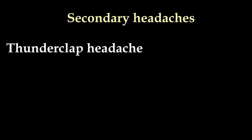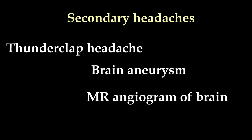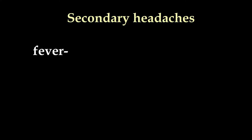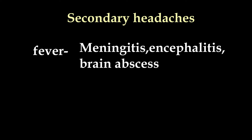The most dangerous is the thunderclap headache, which occurs at the back of the head and then moves to involve the whole head. It is associated with vomiting and is usually due to an aneurysm in the brain. This can be found by MR angiogram, and a coil can be inserted which is life-saving. CT scan detects bleeding in the subarachnoid region after the rupture of an aneurysm — in such a case it is a subarachnoid haemorrhage and is a medical emergency. Fever associated with headache, vomiting, and double vision must be evaluated for brain infections by CT scan of the brain with or without a lumbar puncture.